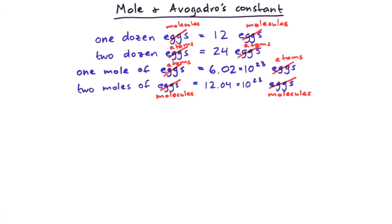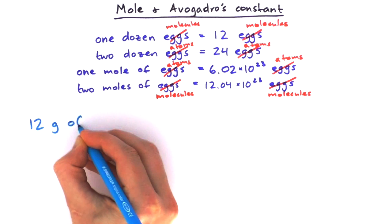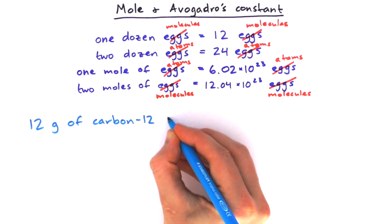The special thing about this number 6.02 times 10 to the power of 23 is that 12 grams of carbon-12 contains this number of atoms, and that's the definition of one mole.